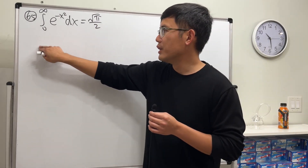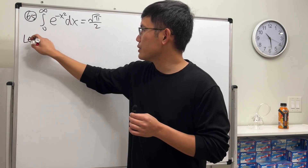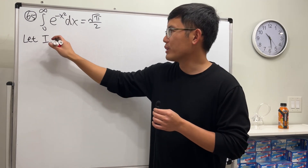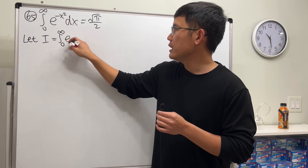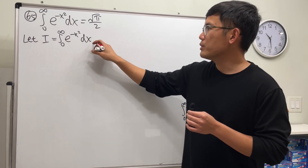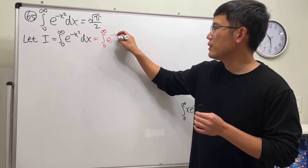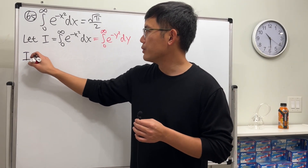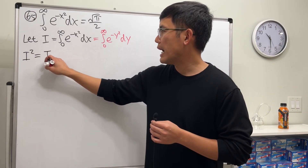We are going to compute this integral — you learn this in Calc 3. I'll call it I, defined as the integral from zero to infinity of e to the negative x squared dx. Then I write it again as the integral from zero to infinity of e to the negative y squared dy. Now I'm going to compute I squared.